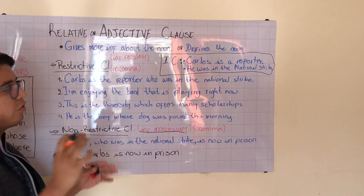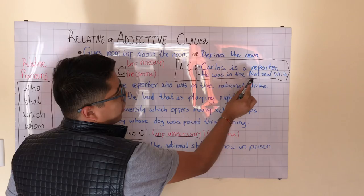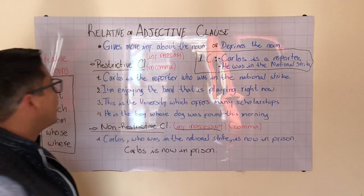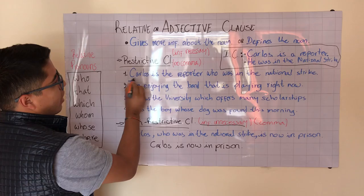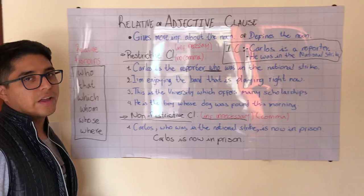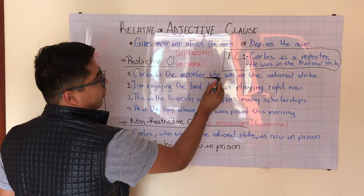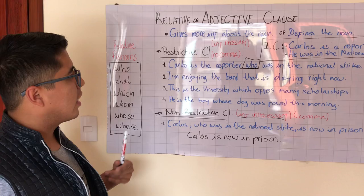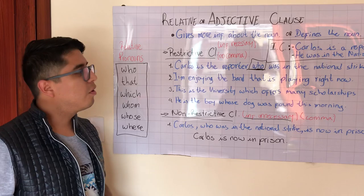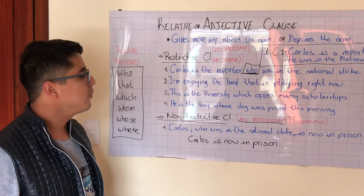Restrictive clauses are used to join two independent clauses together. For example: 'Carlos is a reporter' and 'He was in the national strike' are two independent clauses. We join them into one sentence: 'Carlos is a reporter who was in the national strike.' We use the relative pronoun 'who' to connect them and form one adjective clause.